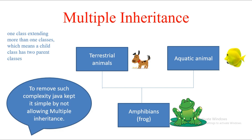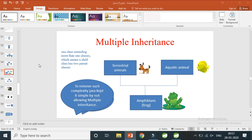To implement the concept of multiple inheritance, interfaces came into the picture. Interfaces solve two issues: first, they implement the multiple inheritance concept in Java, and second, they provide 100% abstraction in Java. In this video I'll show you how interfaces solve the multiple inheritance issue programmatically, so please stay tuned till the end.